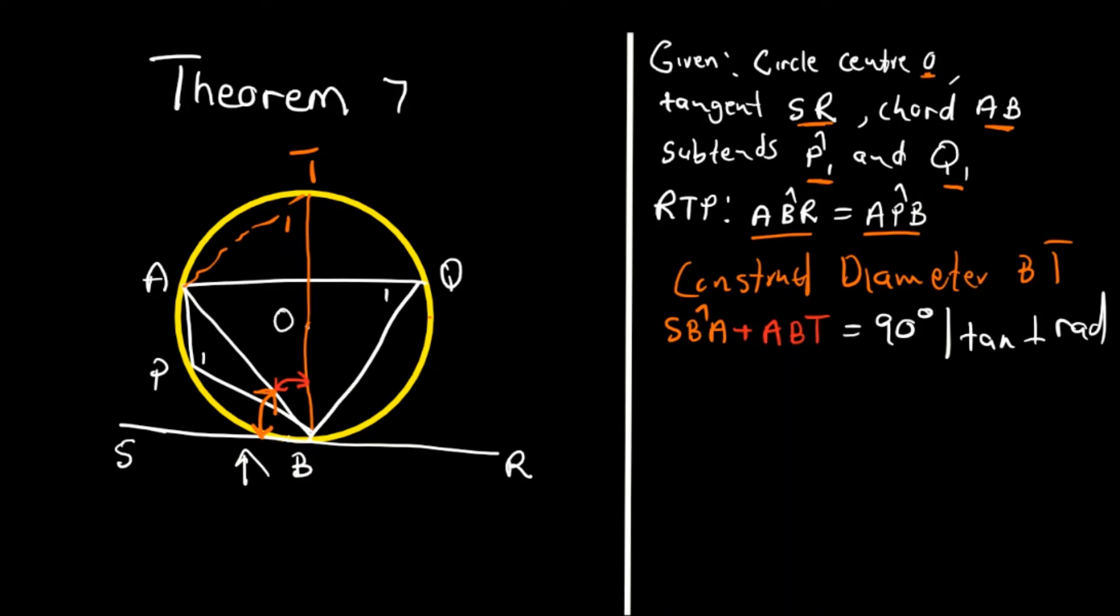And the second thing is this angle here, angle BAT, is equal to 90 degrees. Reason for that: angles of semi-circle.